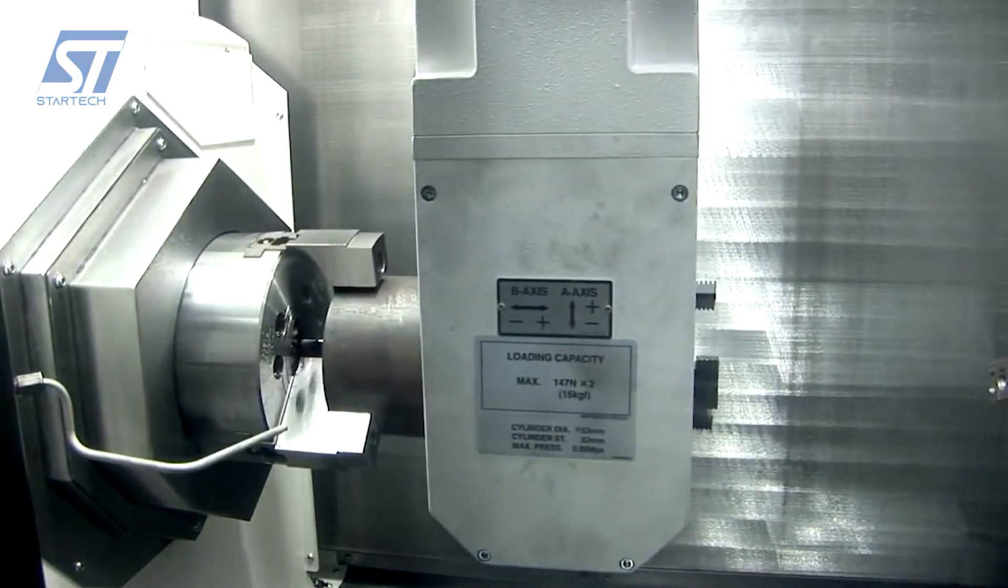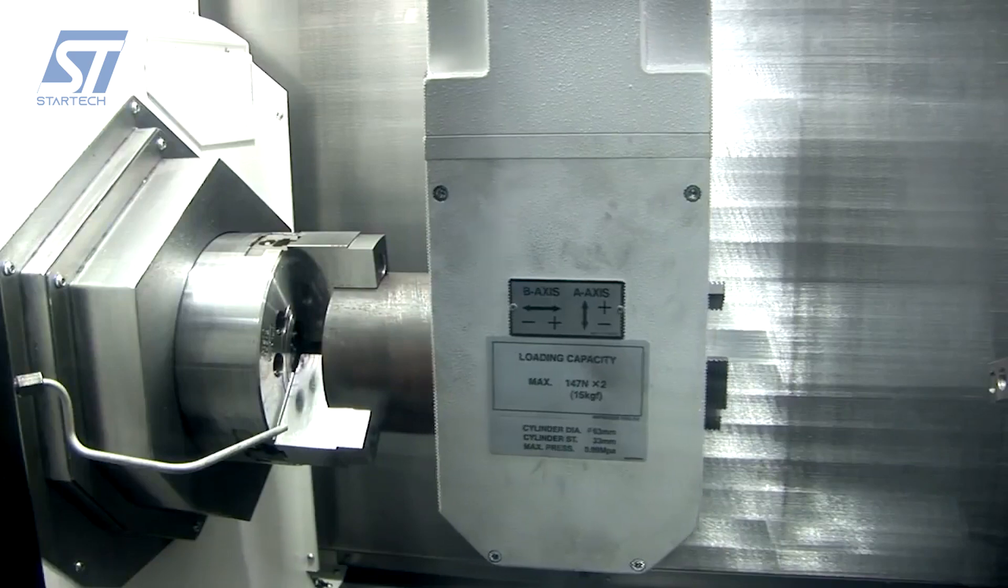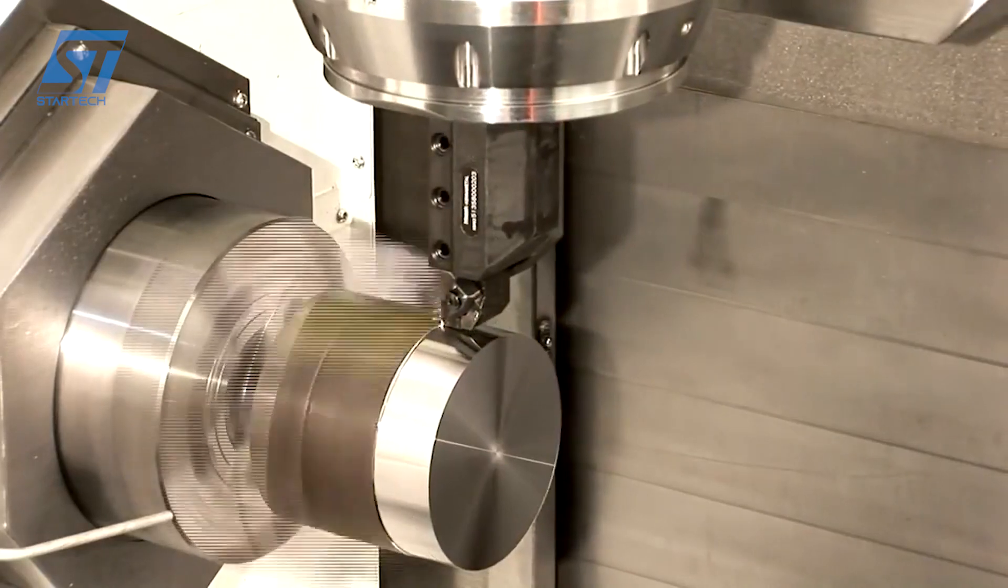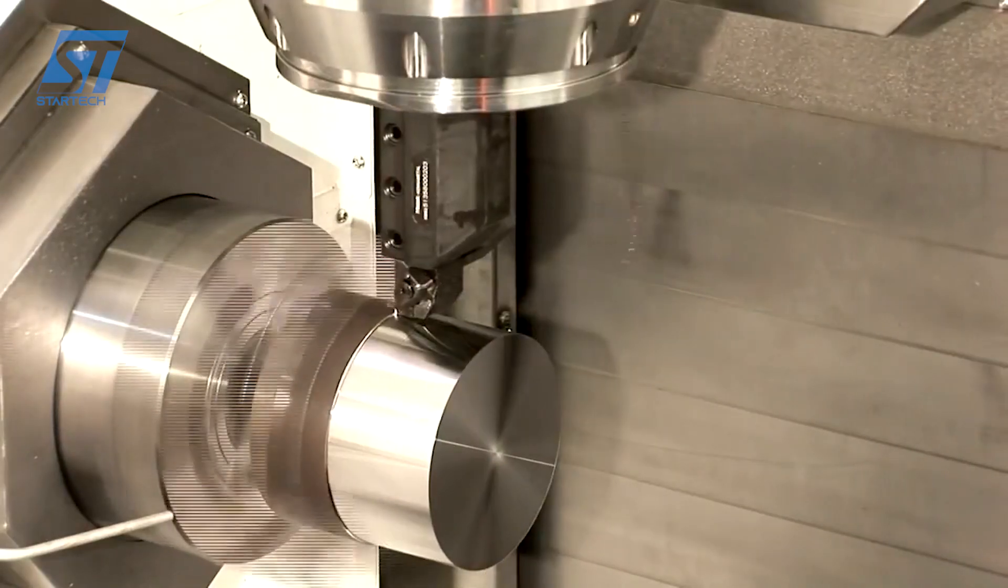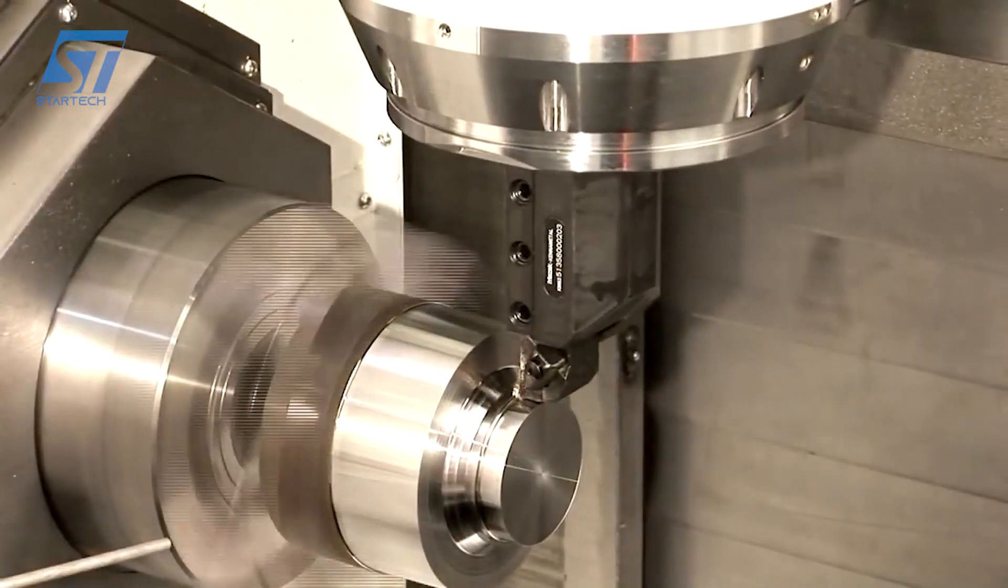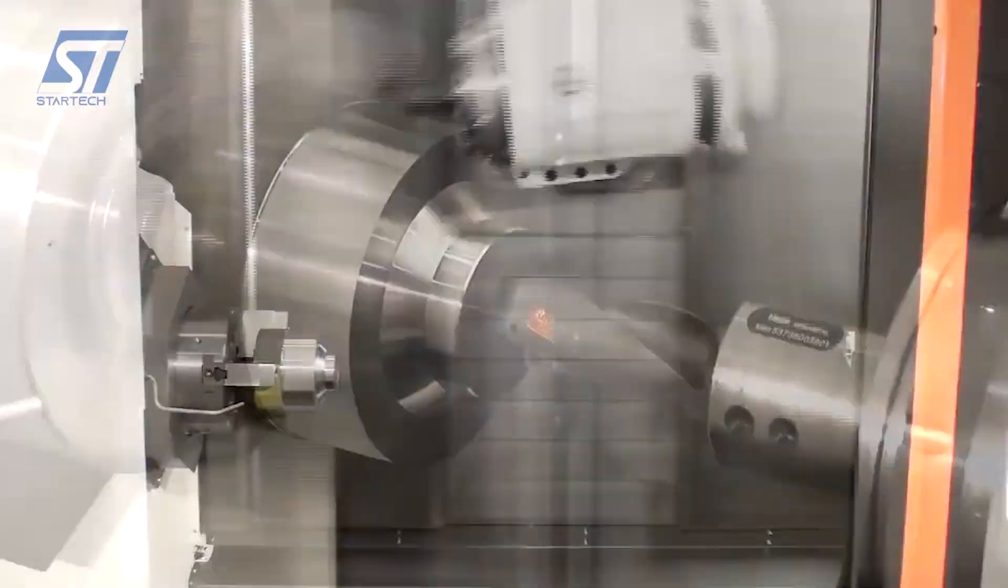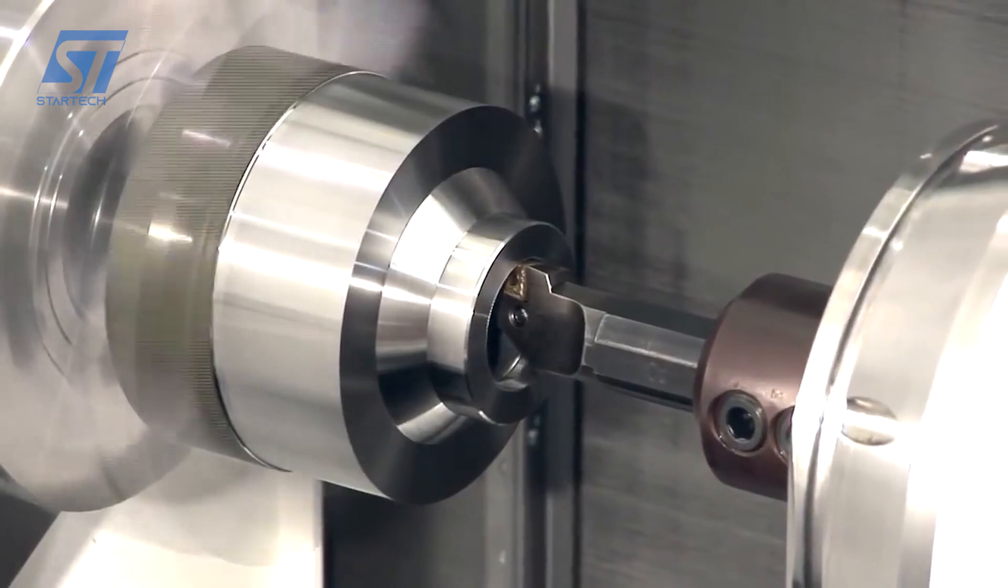The Integrex i200S is a highly advanced multitasking turning center designed for complete machining of complex parts in a single setup. This done-in-one approach significantly reduces production lead times, improves accuracy, and lowers operating costs.